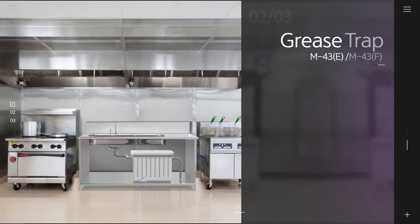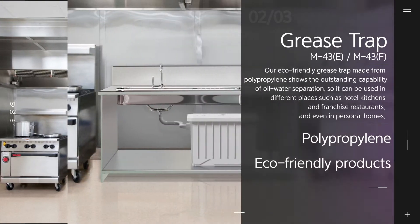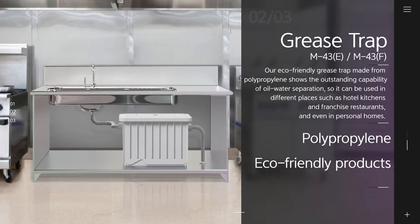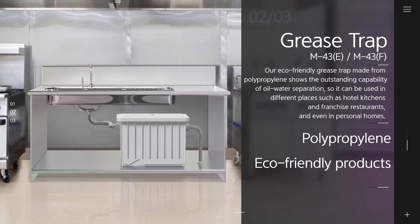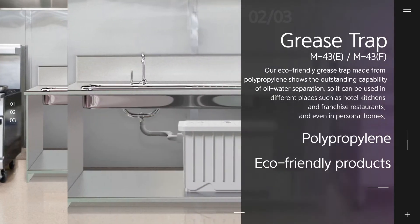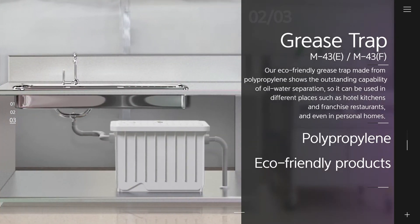Our eco-friendly grease trap, made from polypropylene, shows the outstanding capability of oil-water separation, so it can be used in different places, such as hotel kitchens and franchise restaurants, and even in personal homes.